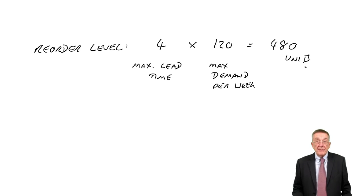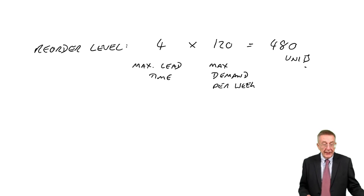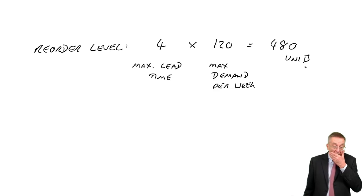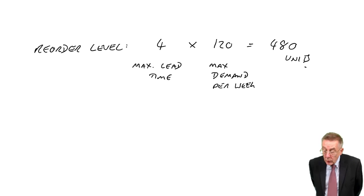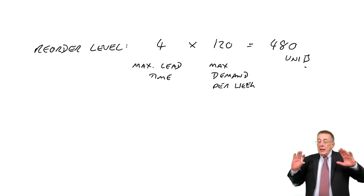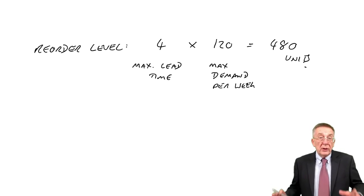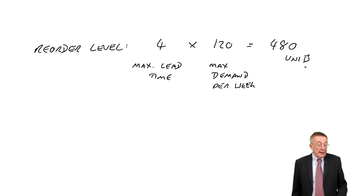So again, arithmetically obviously very easy, but I hope it's making sense and obviously read the question carefully. Just one more thing though. Although that's the worst that could happen, four week lead time, and a demand of 120 a week, and therefore 480 units from the reorder makes it certain we'll never run out. There'll be plenty of times, it's the worst that can happen, but there'll be plenty of times when the lead time will be lower, the lead time might only be three weeks.